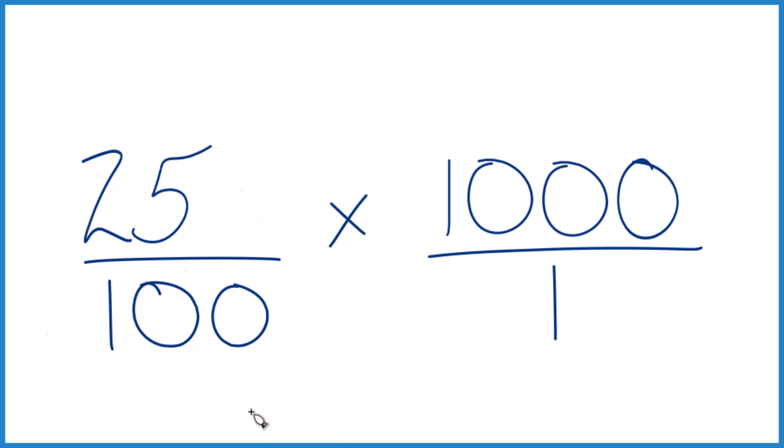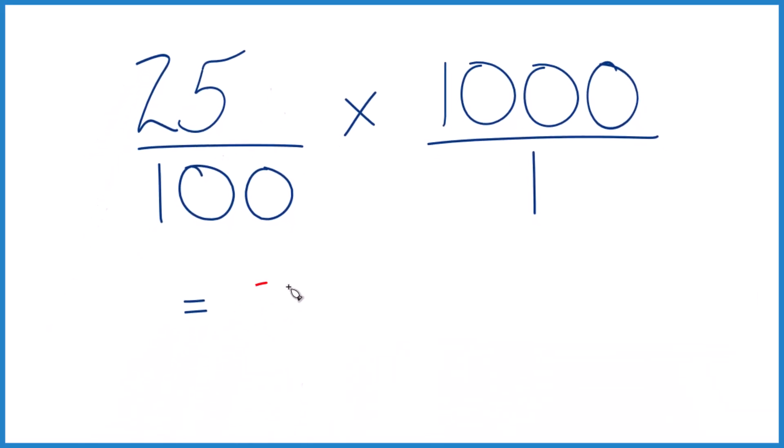25 times 1,000, that's 25,000. And 100 times 1, that's 100.